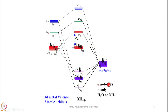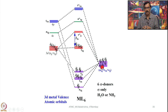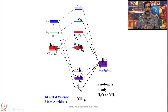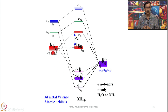Six sigma donor ligands such as water or ammonia again come with 12 electrons. These are the symmetries of the ligand group orbitals that combine with metal orbitals. I have placed 6 electrons in the d orbital; these 6 electrons remain as non-bonding, and if there is any electronic transition, these electrons can be promoted to a higher energy state. This represents a typical hexamine or hexa-aqua metal complex.